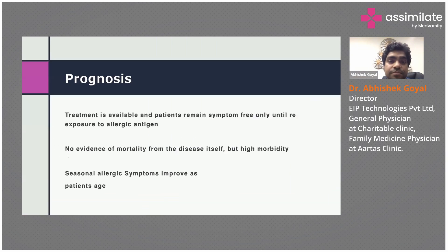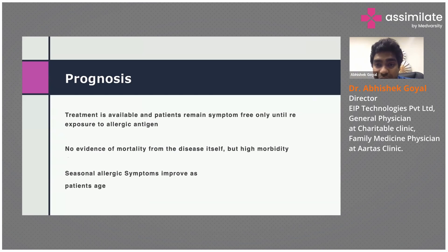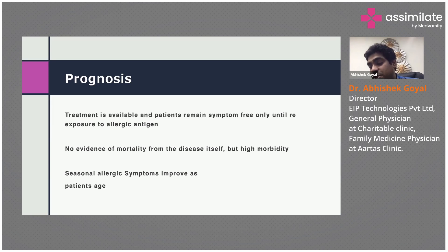The prognosis for patients with allergic rhinitis is relatively good because treatment is available. There is no mortality, but there is high morbidity — people with severe cases have difficulty with their lifestyles. Symptoms generally improve with age, and patients can often avoid the allergen if they can identify one, to maintain a healthy, non-morbid lifestyle.